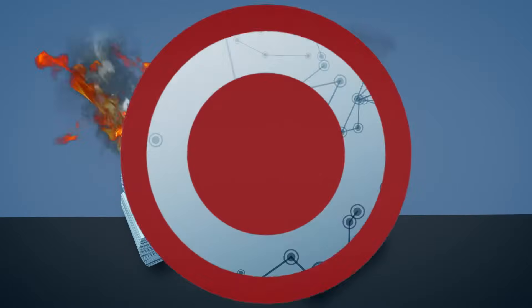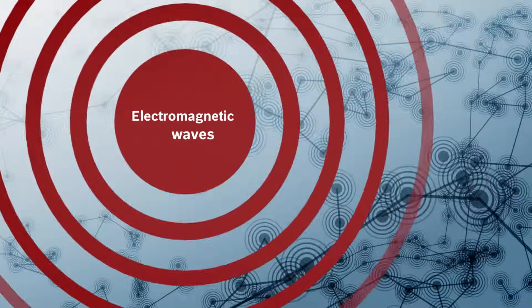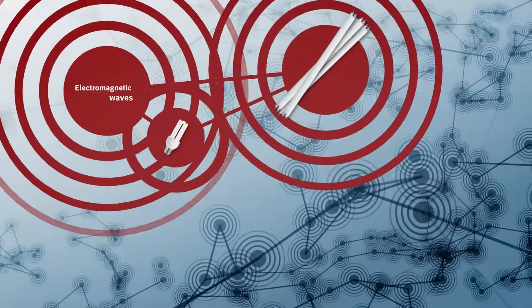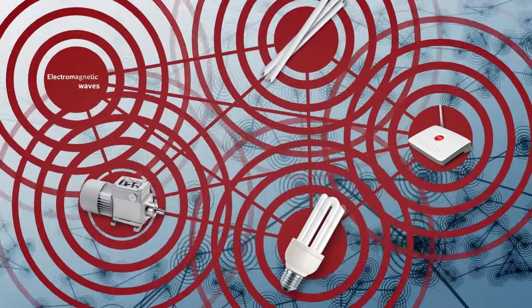One rarely noticed cause is electromagnetic radiation. It can't be seen but it is everywhere. It's caused by fluorescent tubes, energy-saving lamps, electric motors, and Wi-Fi's, among other things.